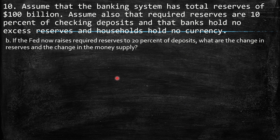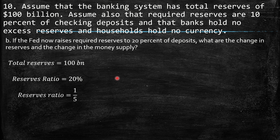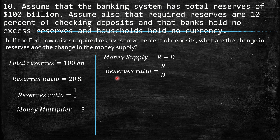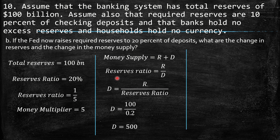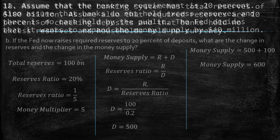Part B: If the Fed raises required reserves to 20% of deposits, total reserves remain $100 billion, but the reserve ratio is now 1/5, giving a money multiplier of 5. Deposits equal $100 billion / 0.2 = $500 billion. Money supply equals $500 billion + $100 billion = $600 billion. The money supply decreased significantly because the money multiplier fell from 10 to 5.